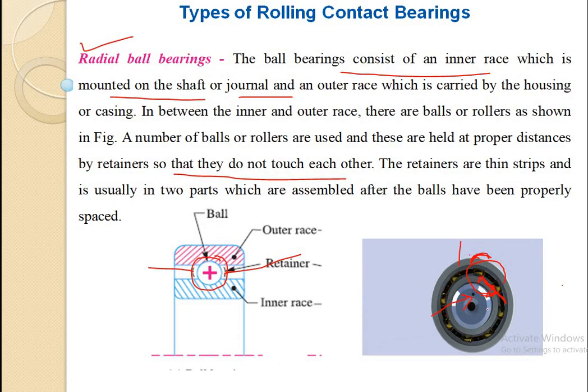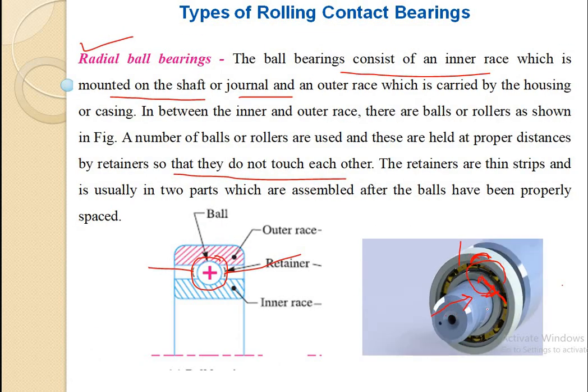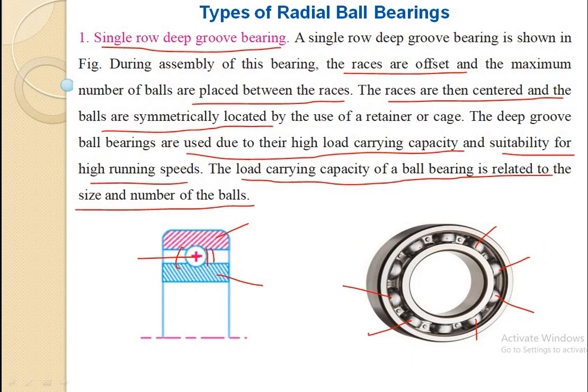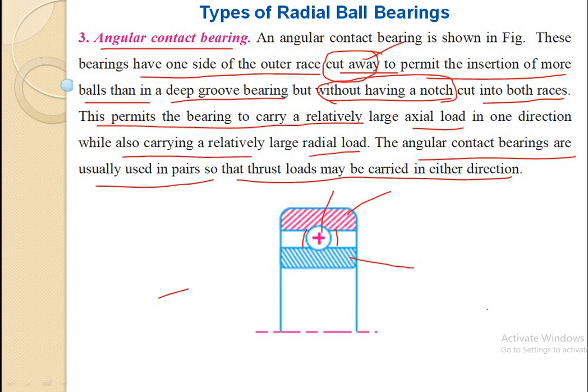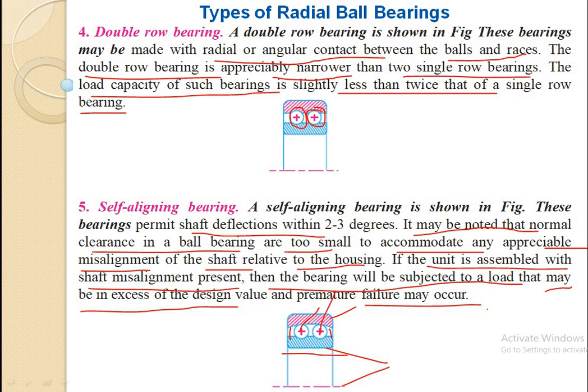In summary, the first major type of rolling contact bearing is the radial ball bearing, under which we have seen five types: single row deep groove bearing, filling notch bearing, angular contact bearing, double row bearing, and self-aligning bearing. I hope you have understood what is meant by rolling contact bearings and how they are classified. Thank you.